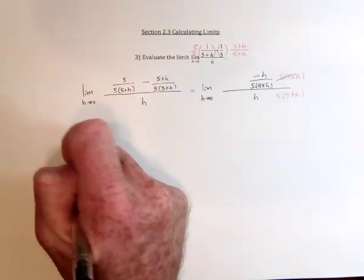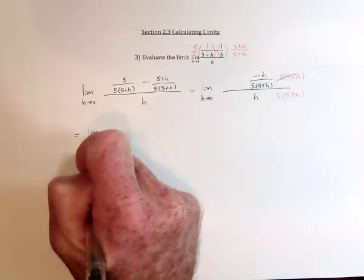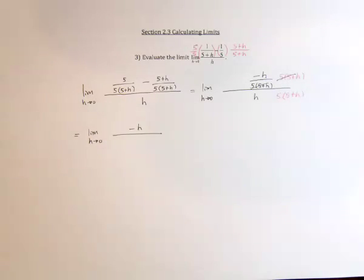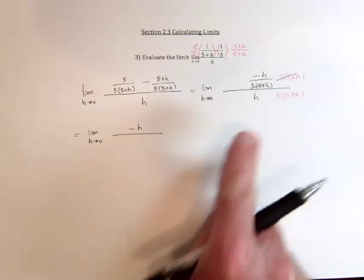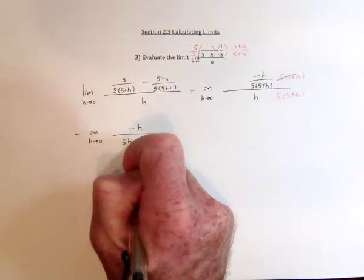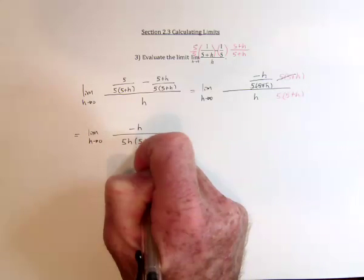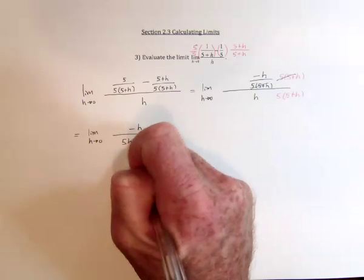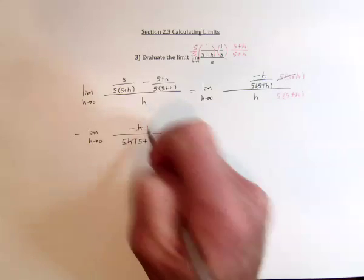And then for the denominator, h times the 5 times (5 plus h). We've got one more step of algebra, and that is divide by h and divide by h. So it leaves a negative 1 on the top.